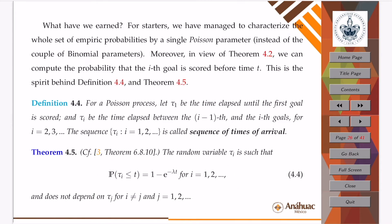What have we earned? For starters, we have managed to characterize the whole set of empiric probabilities by a single Poisson parameter. That is, we have managed to change the whole set of numbers that represent the goals of every team during one season for just one number, the Poisson parameter, which is the average number of goals for one season in any given country.